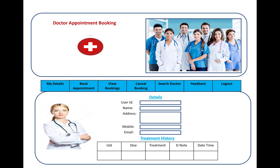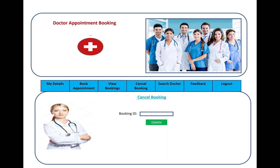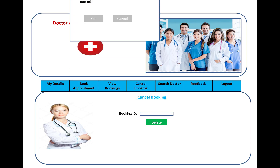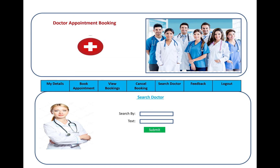After booking, your booking history is shown under My Bookings. It displays the details of the appointment: user ID, name, address, mobile, email, disease, treatment, notes, and date/time. If you want to cancel a booking, there is a delete button. When you click it, a pop-up will appear asking 'Want to cancel appointment?' — click OK to confirm.